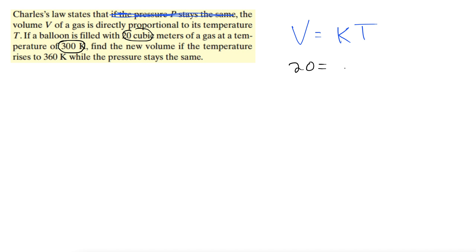20 equals K times 300. Okay, now we solve for K. K equals 20 over 300. So this is, we can cancel a zero. Be careful with that. That only works with zeros. 2 over 30, which is 1/15. Okay, 1/15 there for K.